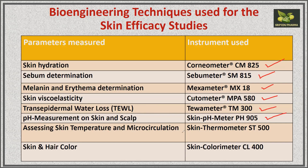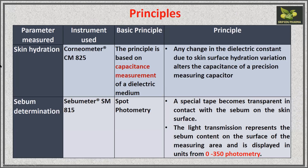pH measurement on skin and scalp is done by a skin pH meter. For assessing skin temperature and microcirculation, there is a skin thermometer. For skin and hair color, a skin colorimeter is used. In this video, we will discuss in short the basic principles and show diagrams related to these instruments. In further videos, we will discuss each instrument in detail.